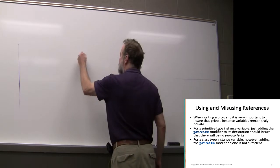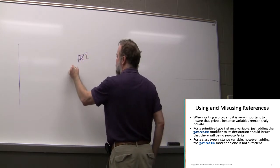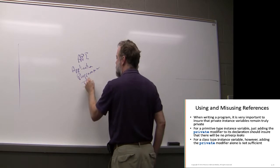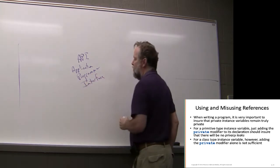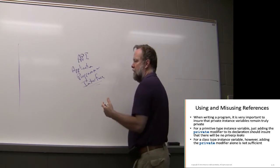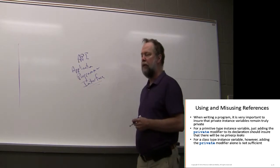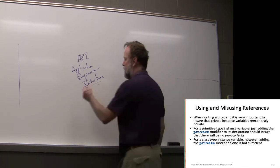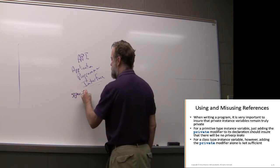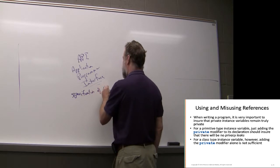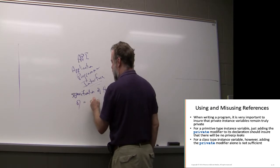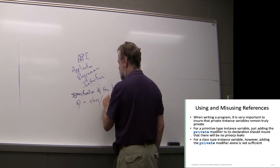The terminology we use for that is API — Application Programmer Interface. This is essentially a contract to the users of your code, a specification of the behavior of a class or an entire program — which could be a set of classes as well.